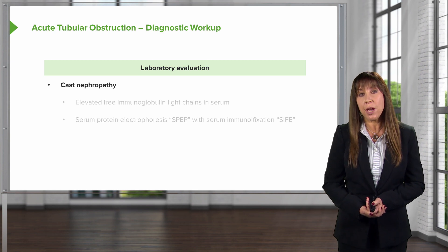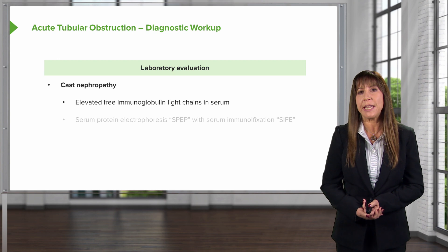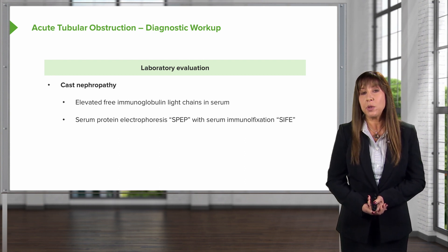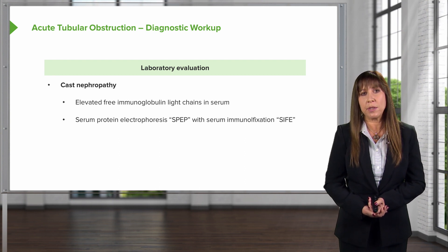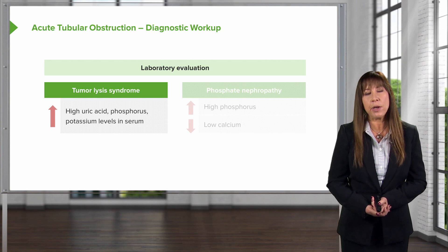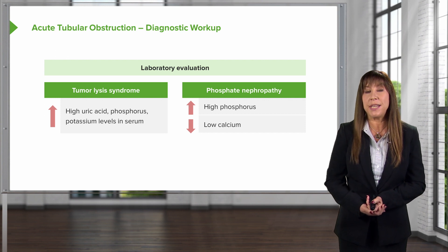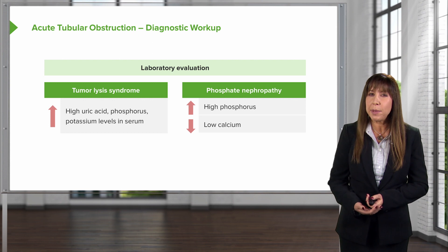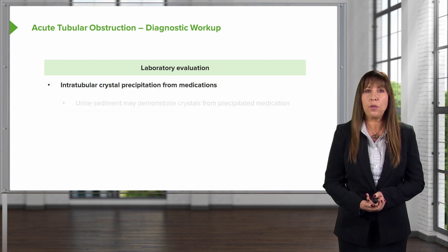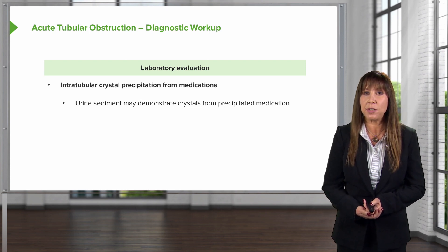Laboratory evaluation is also very helpful. For cast nephropathy, we're looking for elevated free immunoglobulin light chains in the serum — we may order a serum protein electrophoresis (SPEP) with serum immunofixation, and serum free light chains. For tumor lysis syndrome, we'll see high uric acid, high phosphorus, and high potassium levels, as in our patient's case. For phosphate nephropathy, we tend to see very high phosphorus and very low calcium — because of acute calcium phosphate deposition in the tubules. For medications, we can examine urinary sediment and may see crystals from precipitated medications that point us to that diagnosis.